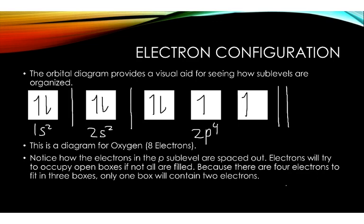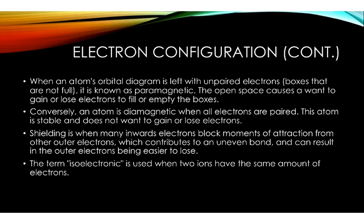Notice how the electrons in the p sub-level are spaced out. Electrons will try to occupy open boxes, if not all are filled. So if I have an apartment complex, and I have 3 open rooms and 4 people, do you think the 2 people are going to try to get with each other? No. I'm going to have to force one into a room with another, but then I'll be able to give the other 2 people their room by themselves. Because there are 4 electrons fit into 3 boxes, only 1 box will contain 2 electrons, as 1 apartment will contain 2 people.